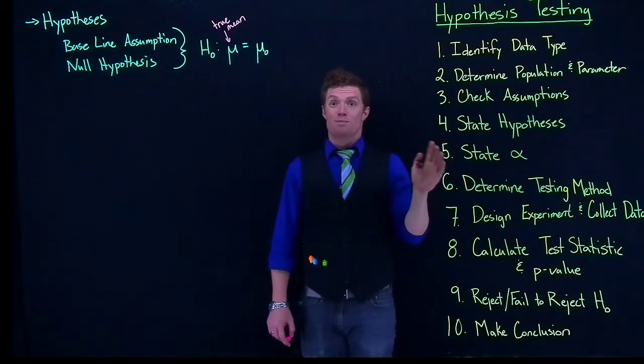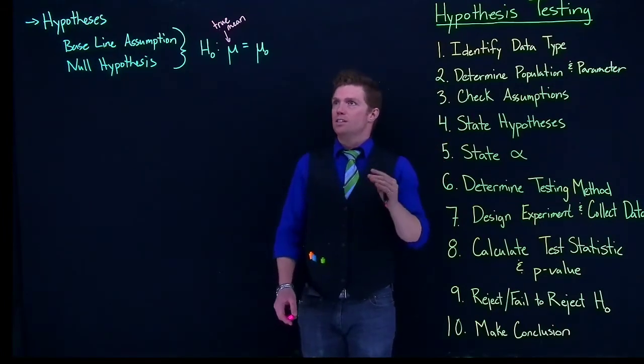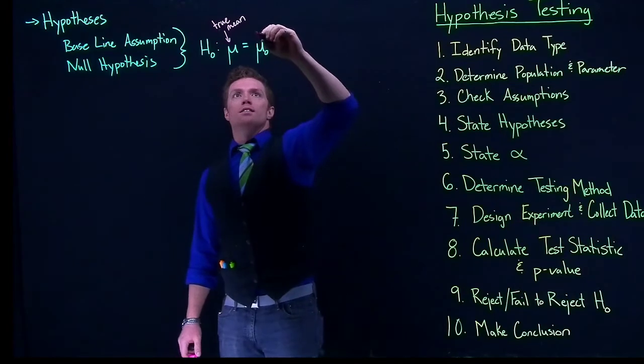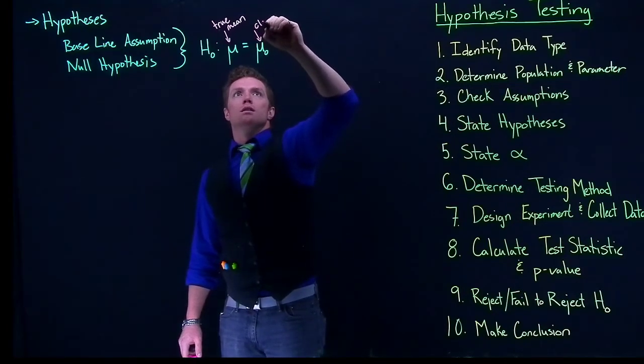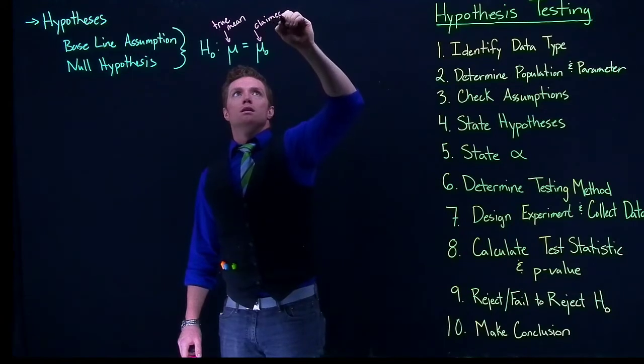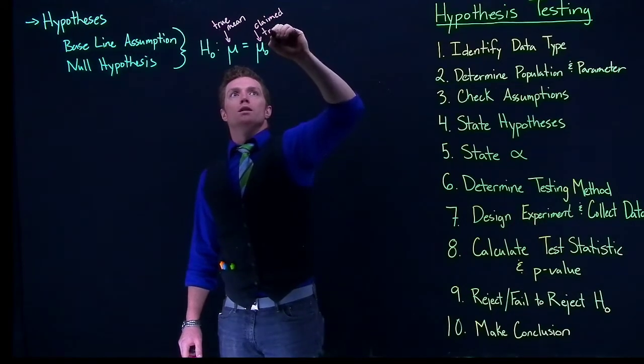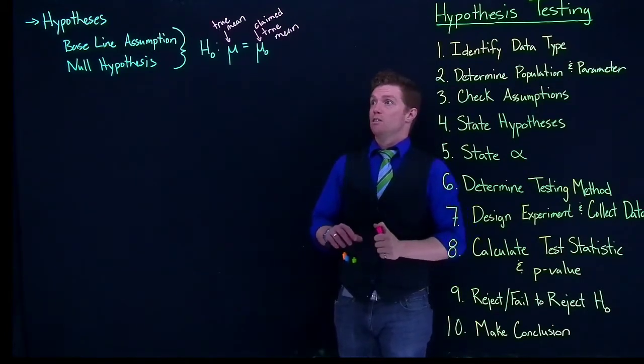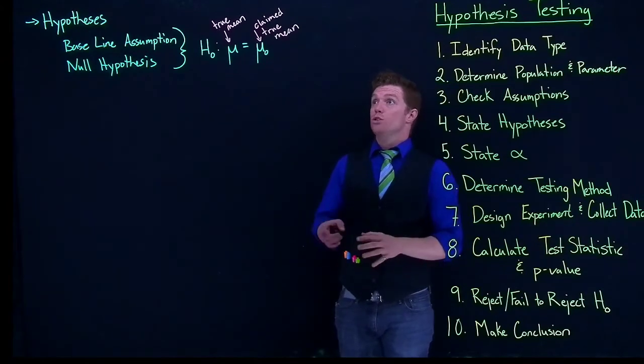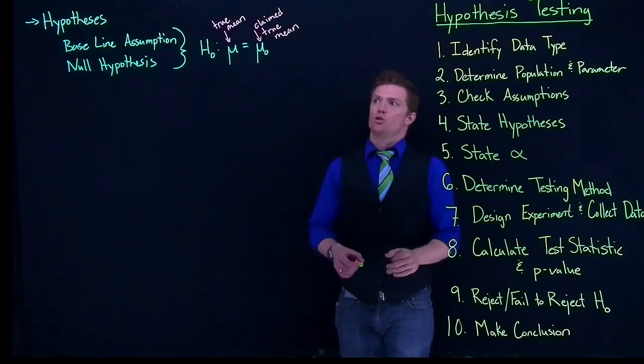There is some true mean out here. And this is the claimed true mean. So the null hypothesis is that the true mean is equal to some claimed true mean.